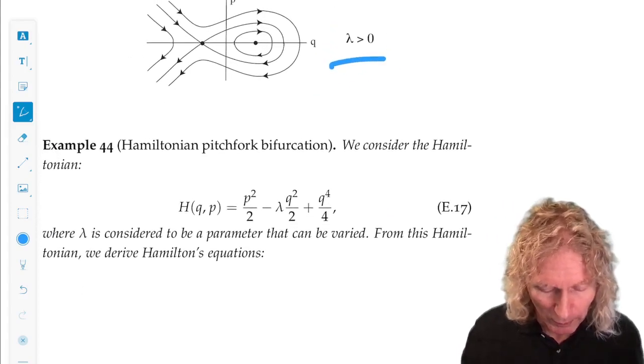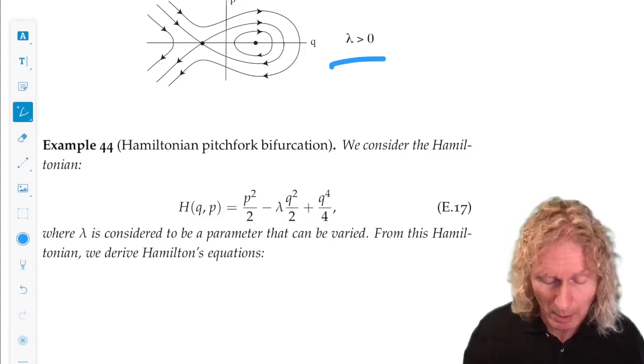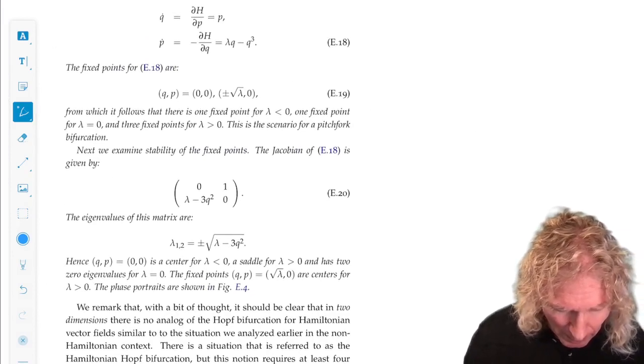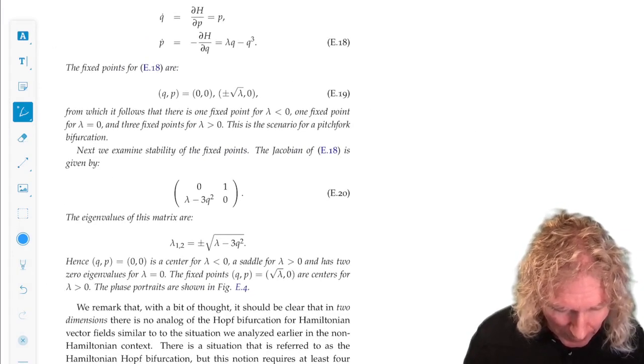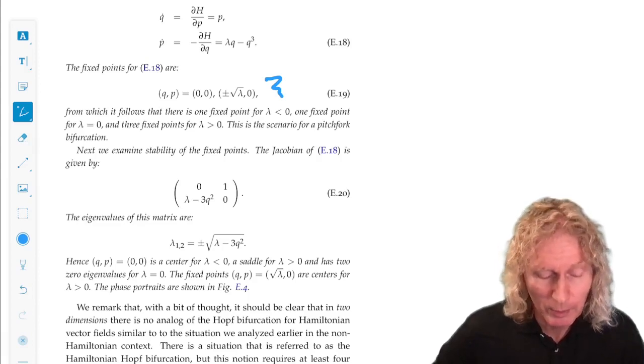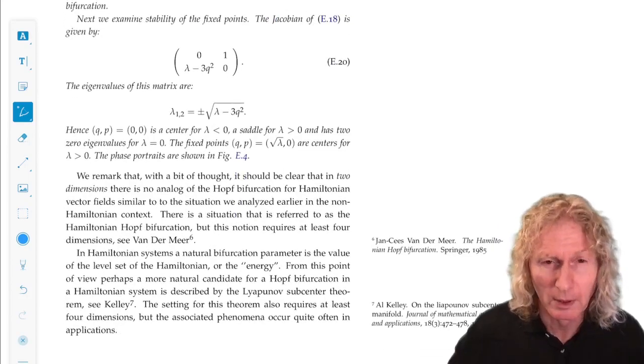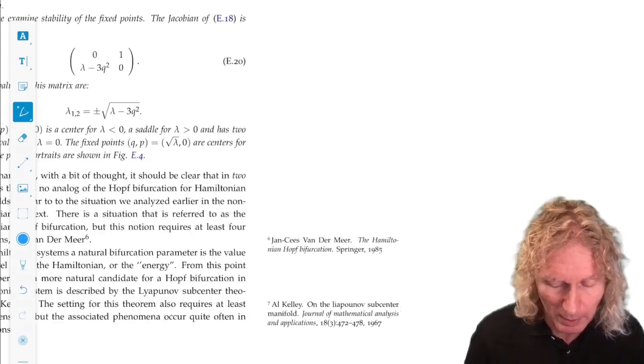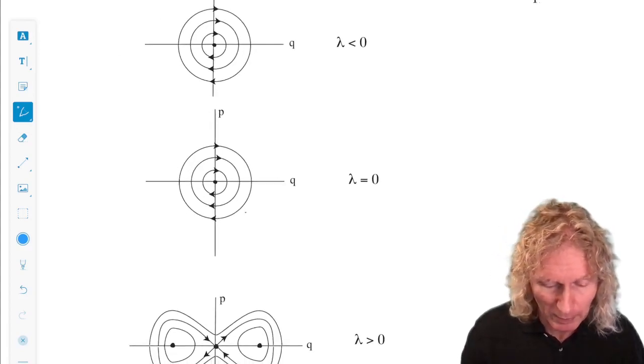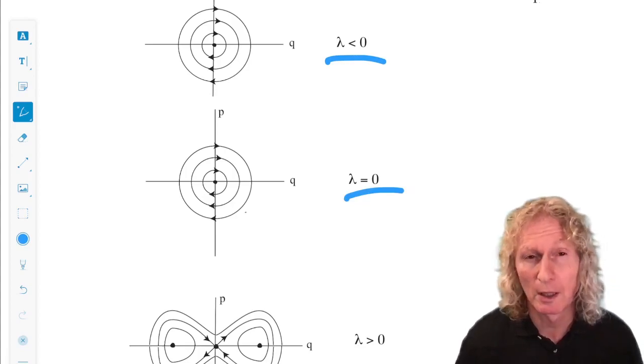Hamiltonian pitchfork, here's the model for this. And you can guess what's going to happen. We're going to go from one to three through a non-hyperbolic point. So you write down Hamilton's equations. You check for the equilibria, and we have one equilibrium for lambda negative and three equilibria for lambda greater than zero. You can do the general nonlinear stability analysis, but the most informative thing is to plot the level curves. For lambda less than zero, there's one fixed point. It's stable. For lambda equals zero, it becomes non-hyperbolic.